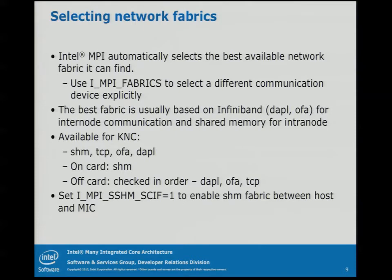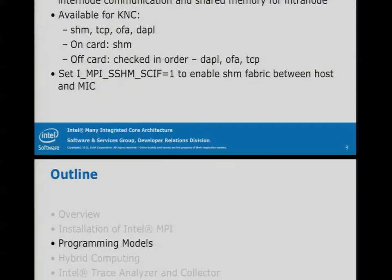You have IMPI fabrics that you can set explicitly, or you can allow it to search. It will typically look for InfiniBand first because it's the highest performance — RDMA. On card, you'll always use a shared memory interface, then it'll check for DAPL, OFA, and TCP is the fallback, implemented over the virtual Ethernet stack.